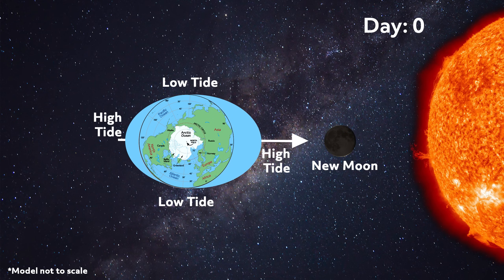The Sun is so far away from the Earth that the Earth only experiences half the gravitational pull from the Sun as it does from the moon. However, when the Sun and moon line up with one another, their gravitational attractions combine, causing high tides to be even higher. These are called spring tides.